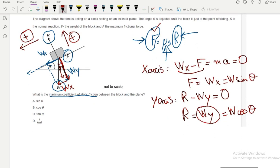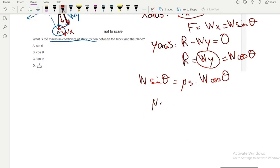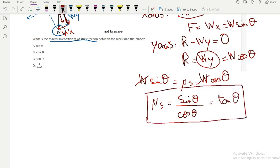So now F is W sine theta is equal to the coefficient of static friction times R, which is W cosine theta. So now coefficient of static friction, which means this is sine theta divided by cosine theta, which is tangent of theta. So the coefficient of static friction is equal to tangent theta, which means the right answer is C.